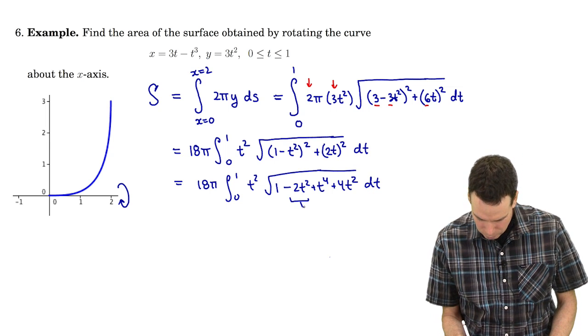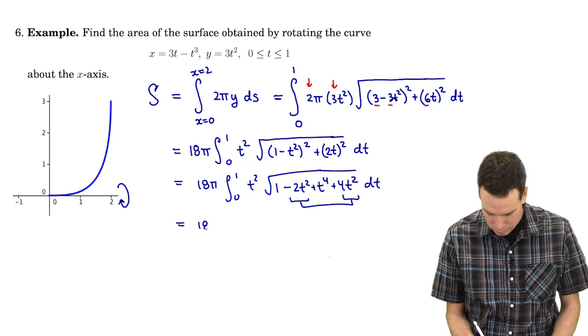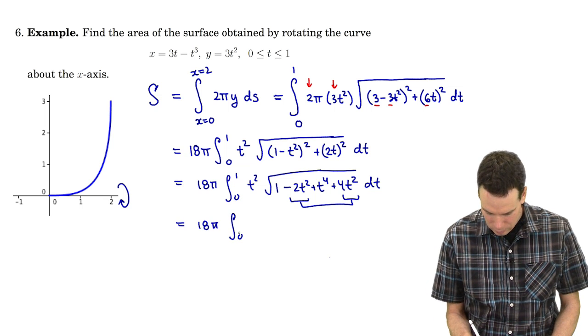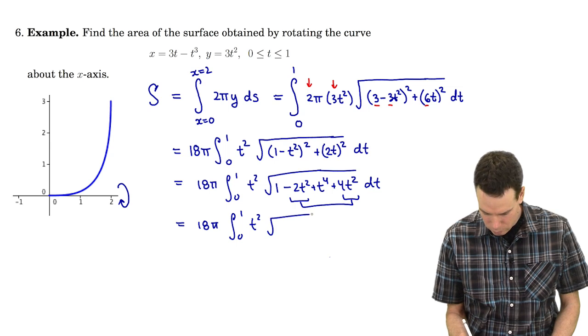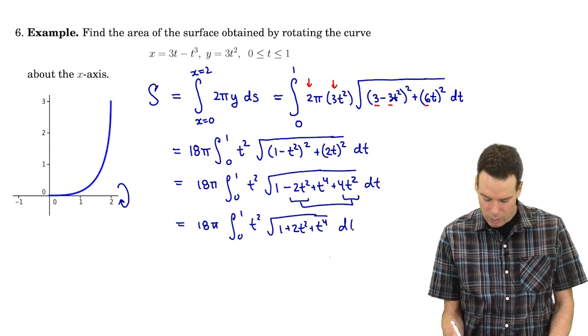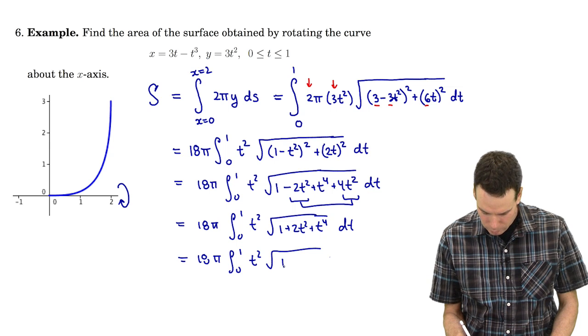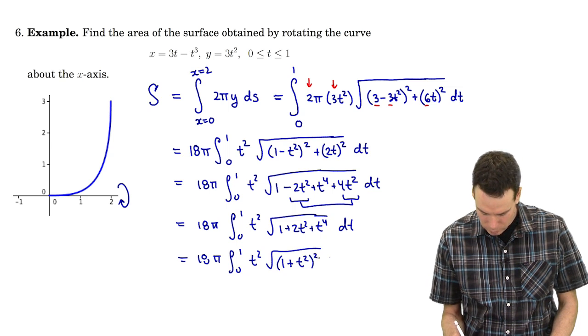I notice that these two combine together very nicely to give me the square root of 1 + 2t² + t⁴ and what's under the square root sign is a perfect square. So that becomes the square root of (1 + t²)² dt.